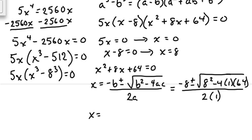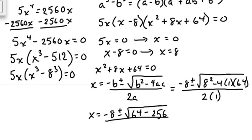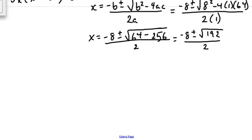Simplifying: x equals negative 8 plus or minus the square root of 64 minus 256, divided by 2. Now 64 minus 256 is negative 192, divided by 2. So we have x equals negative 8 plus or minus the square root of negative 192, all over 2.